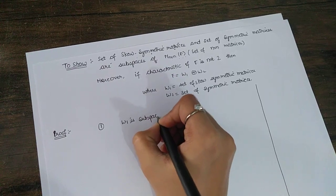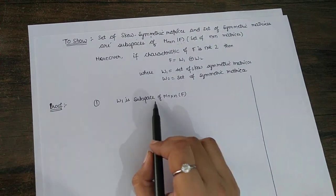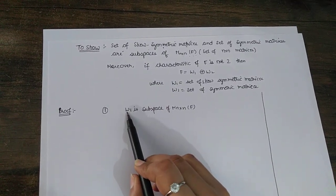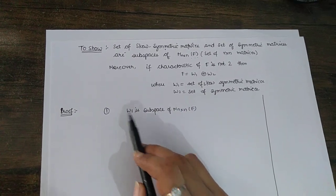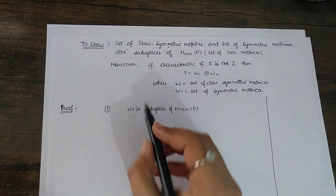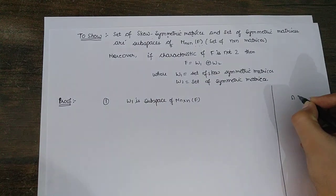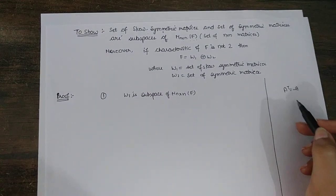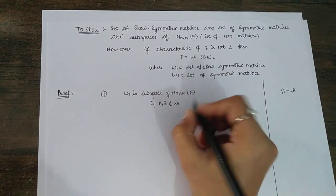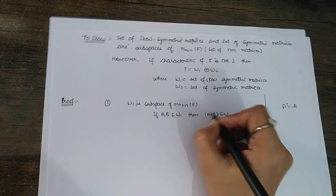First, we will prove that W1 is a subspace of M_{n×n}(F). To prove that a set is a subspace of a bigger set, there are two things we have to prove: first, if we take two elements from W1, their sum should also be in W1; and second, the scalar multiple of any element of W1 should also be in W1. Since W1 is the set of skew-symmetric matrices — matrices whose transpose equals the negative of the matrix — we need to show that if A and B are in W1, then A + B is also in W1.